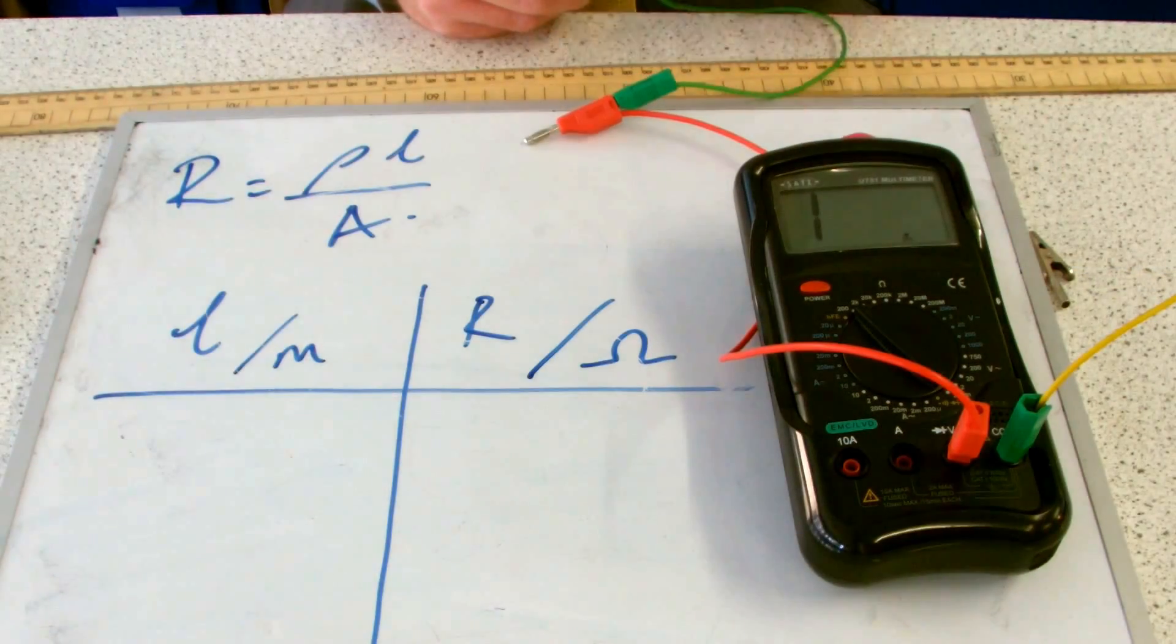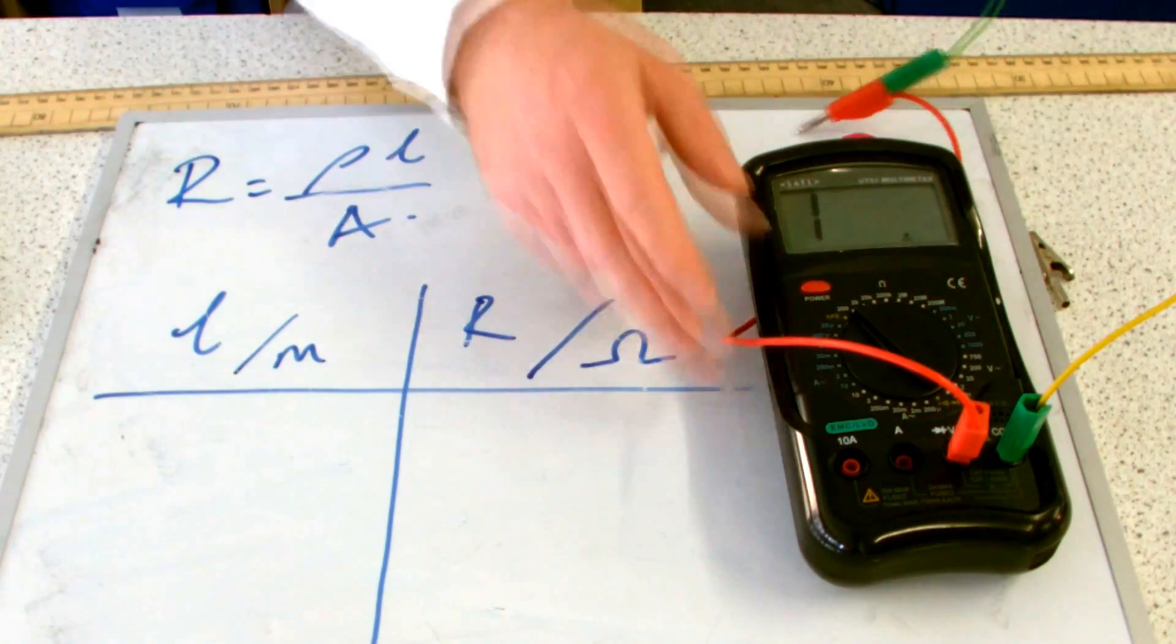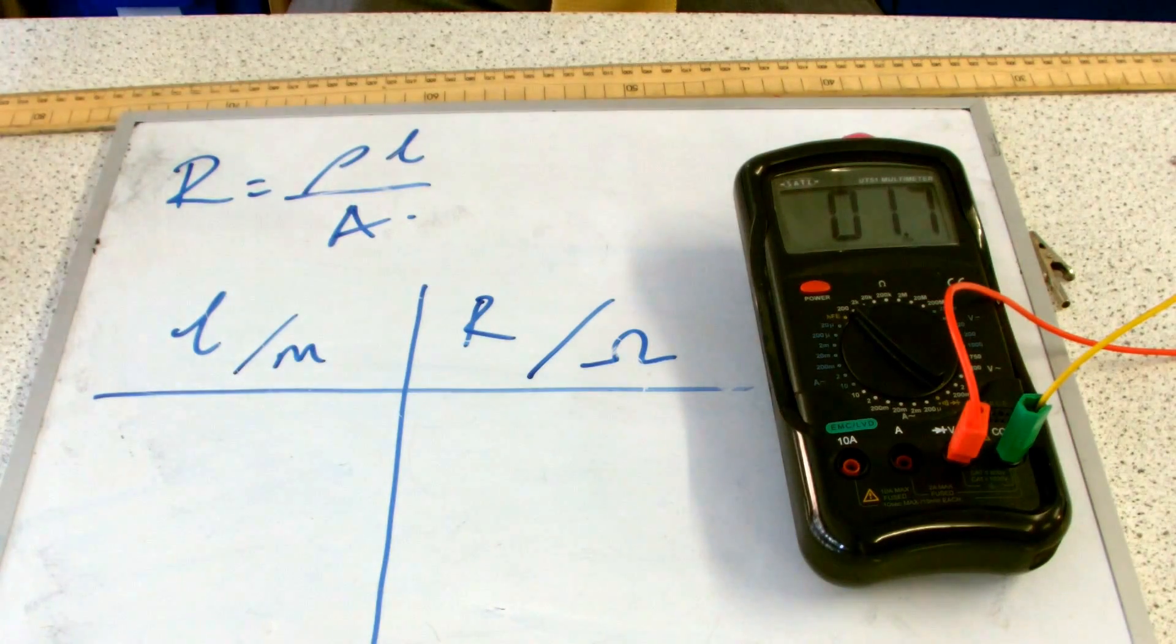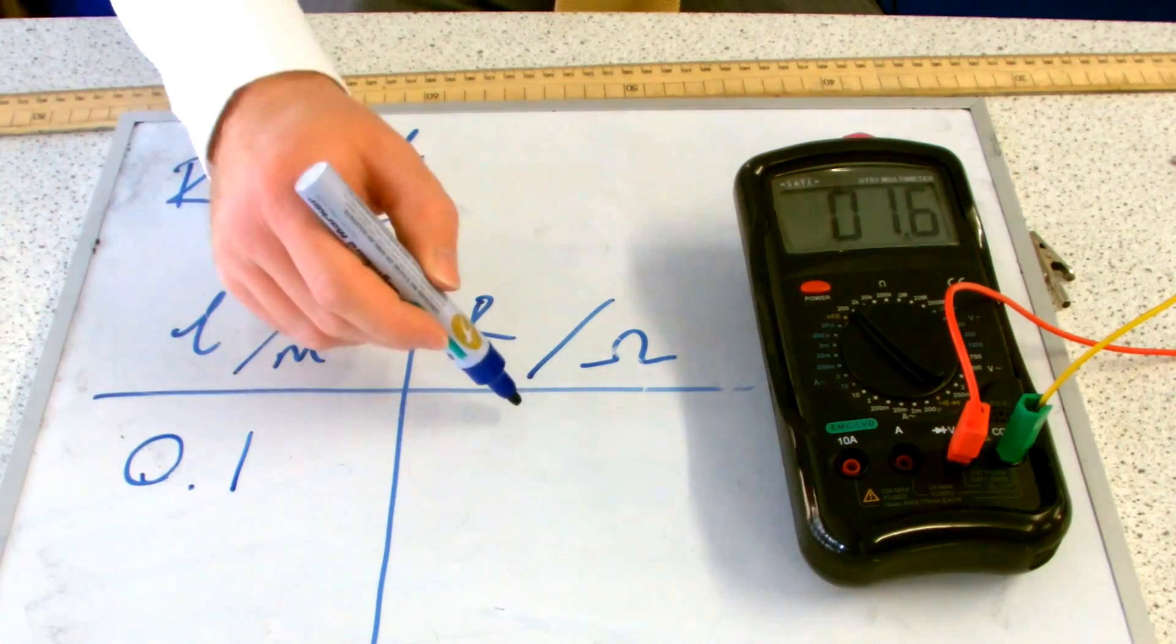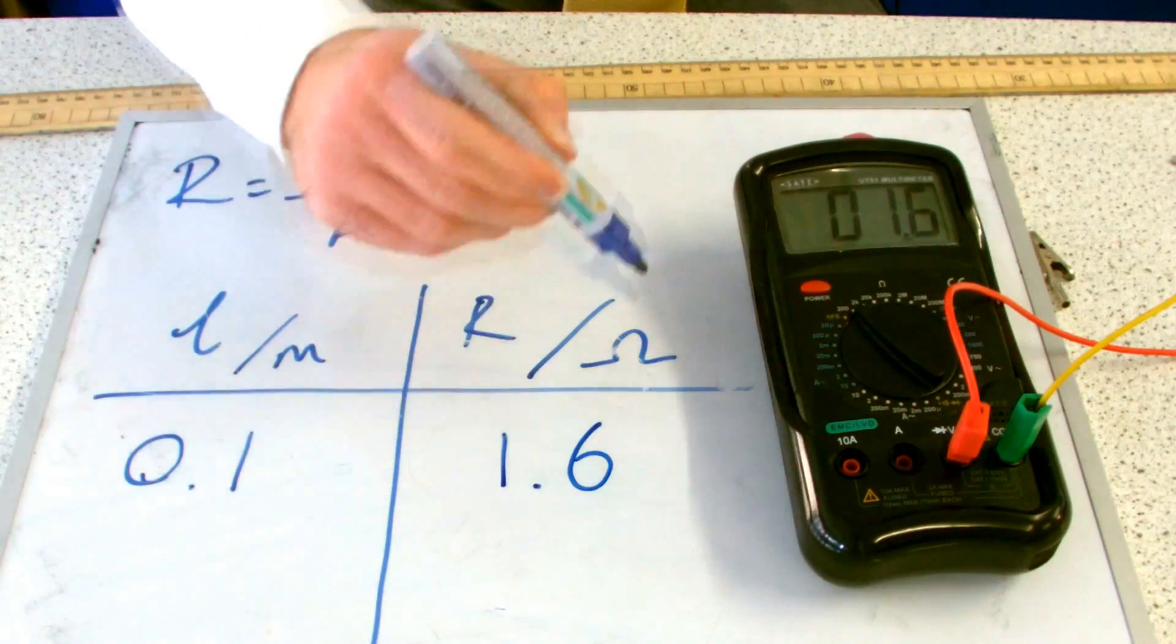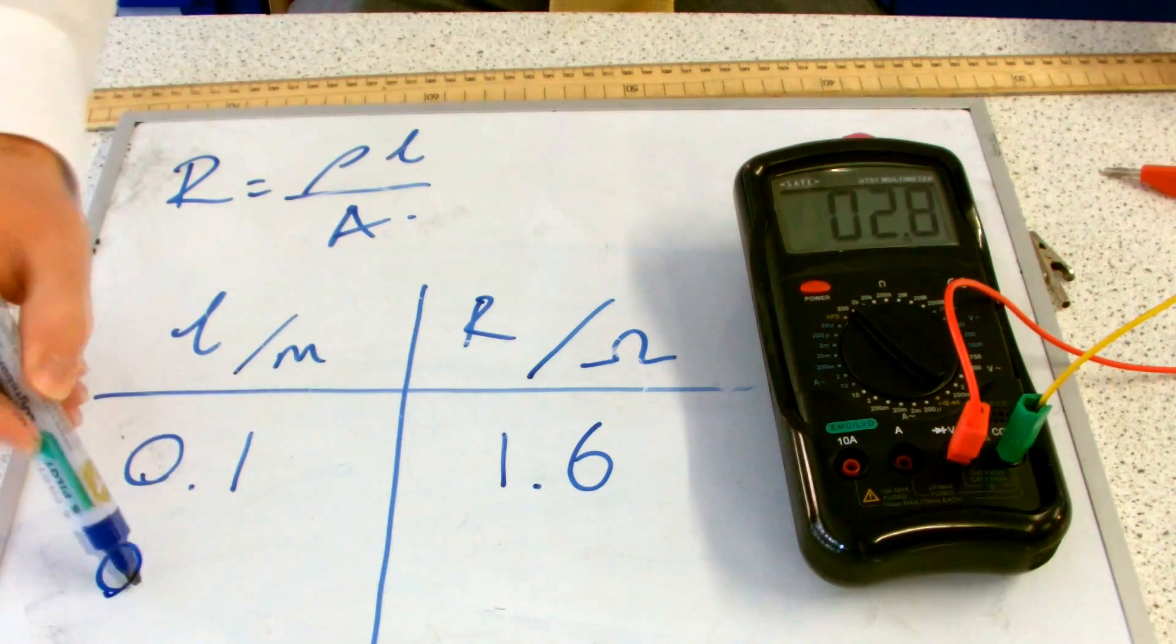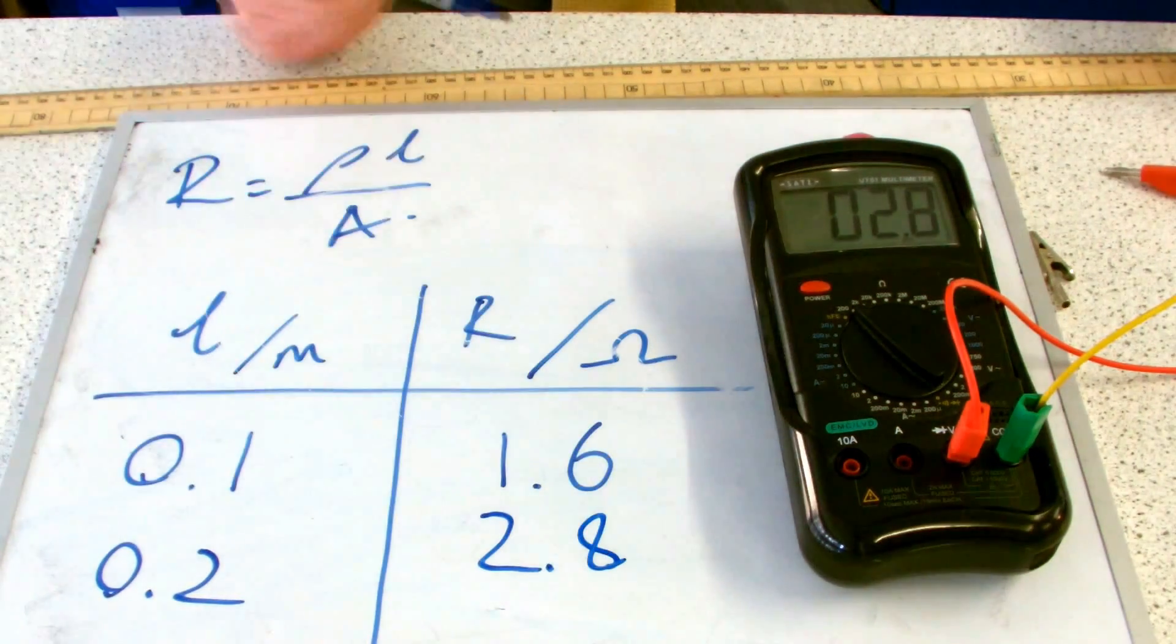Now I'm ready to collect my results. All I'm going to do is press this wire down firmly 10 centimeters away from the end of the wire, and record in my results the length, 0.1 meter, and the resistance, you can see, which is firmly set at 1.6 ohms. Then I move the next 10 centimeters, and I record the reading. 2.8 seems to be working quite well so far.